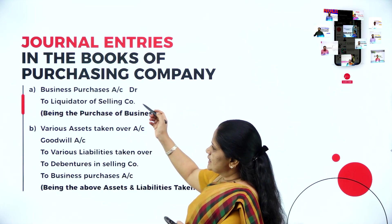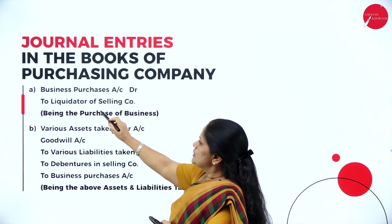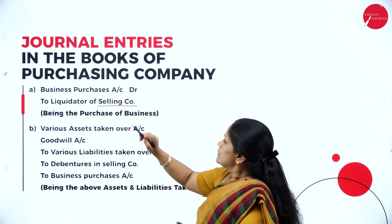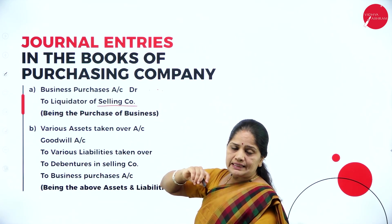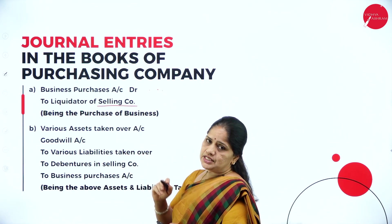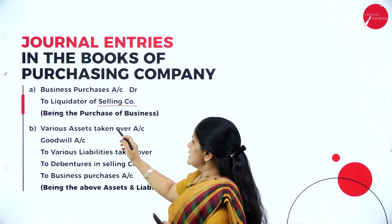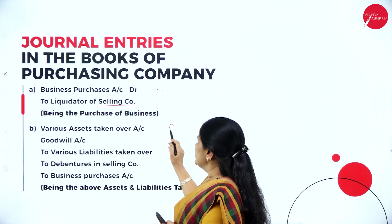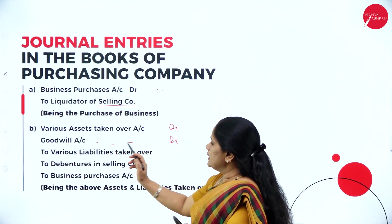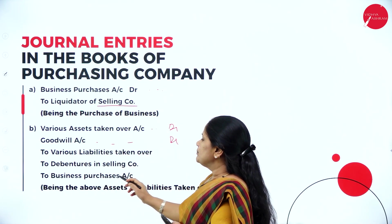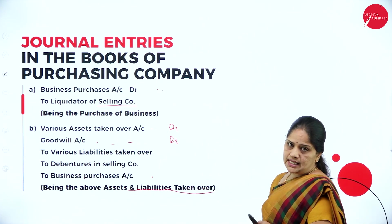The first entry will be for business purchase. Business purchase account debited to liquidator of selling company. The amount will be the purchase consideration paid. The next entry will be for the various assets taken over by the purchasing company — various assets taken over account debited, and if goodwill is taken over, that also debited, to various liabilities taken over, to debentures in selling company, to business purchase account, being the above assets and liabilities taken over.